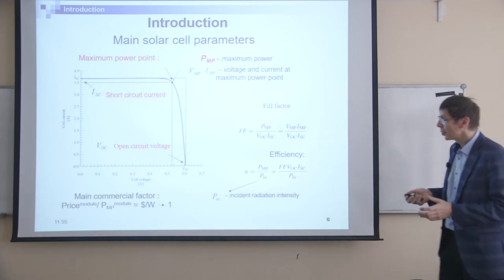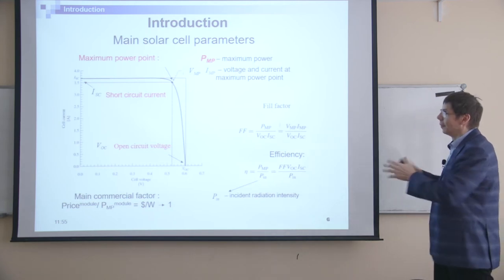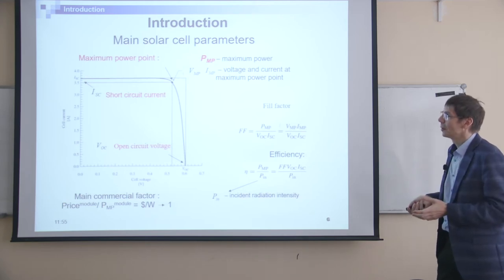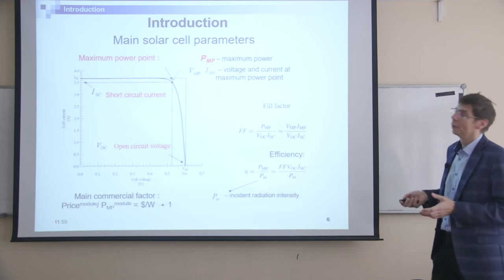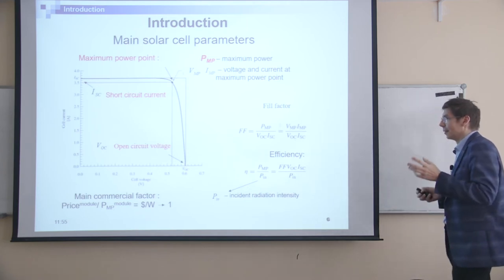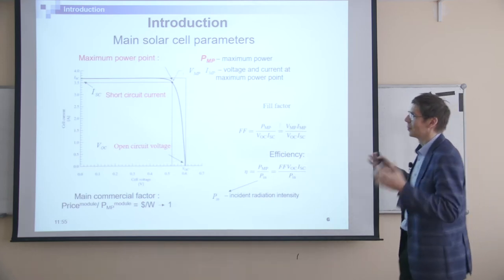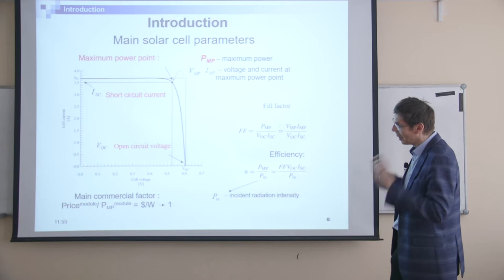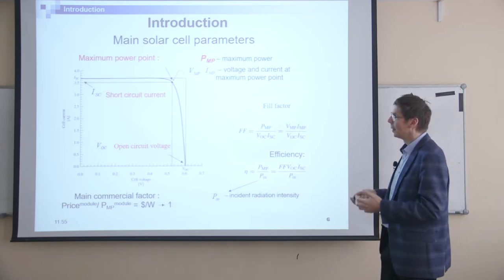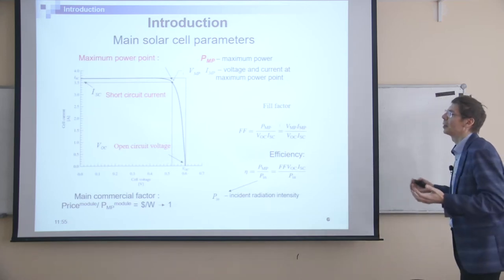First, the introduction. I think everything presented here is well known to you. You know that the main parameters of the solar cell — it's the IVQ curve. I hope you know everything, but let's repeat because it's the base of our course. The main idea is to know how to measure correctly the IVQ of a solar cell, because IVQ is the main parameter of the solar cell.